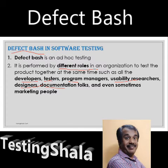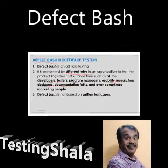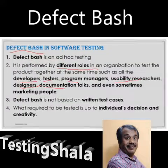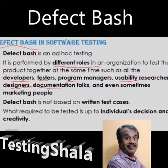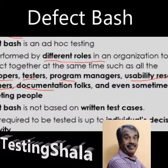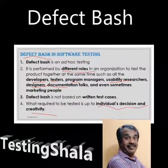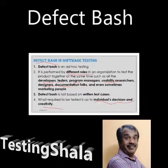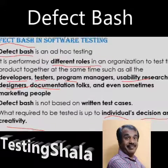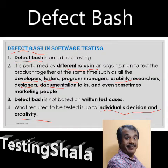In defect bash, there are no written test cases given to the participants. They test on their own with no rules applicable — they can test anything based on their individual decisions and creativity. The main goal is to find as many defects as possible in-house so that all issues can be fixed from a business point of view.